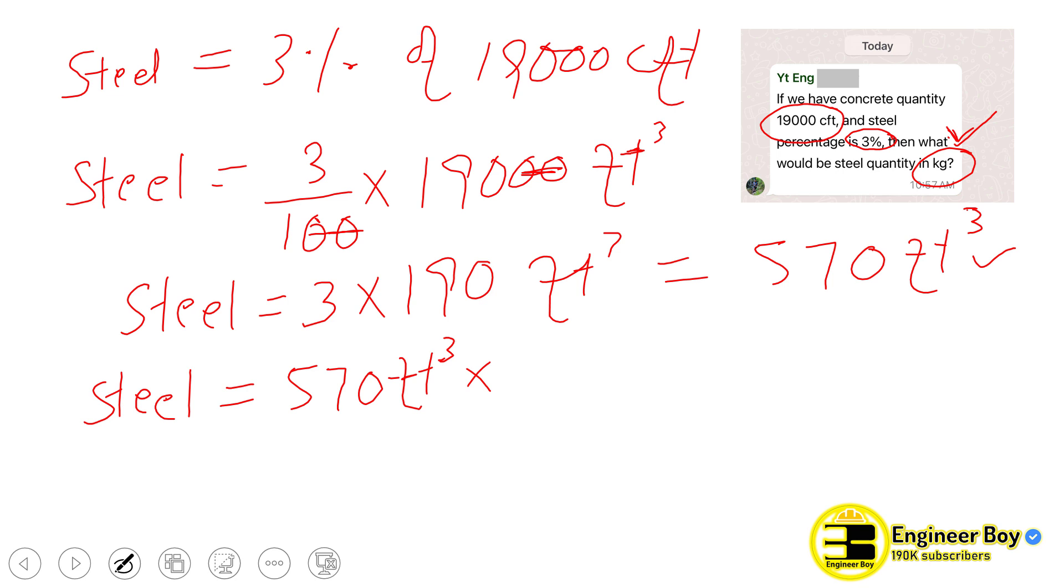Mild steel is 222.5 kg per cubic feet. So this is the density. If you multiply these two things, we can have the quantity of steel in kg which should be 126,825 kg. This is so simple.